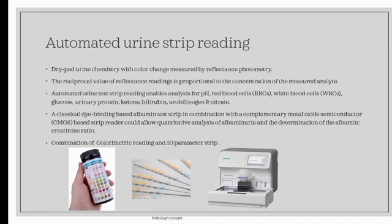Automated strip reading enables analysis of pH, red blood cells, white blood cells, glucose, protein, ketone bodies, bilirubin, urobilinogen, and nitrate in the urine.